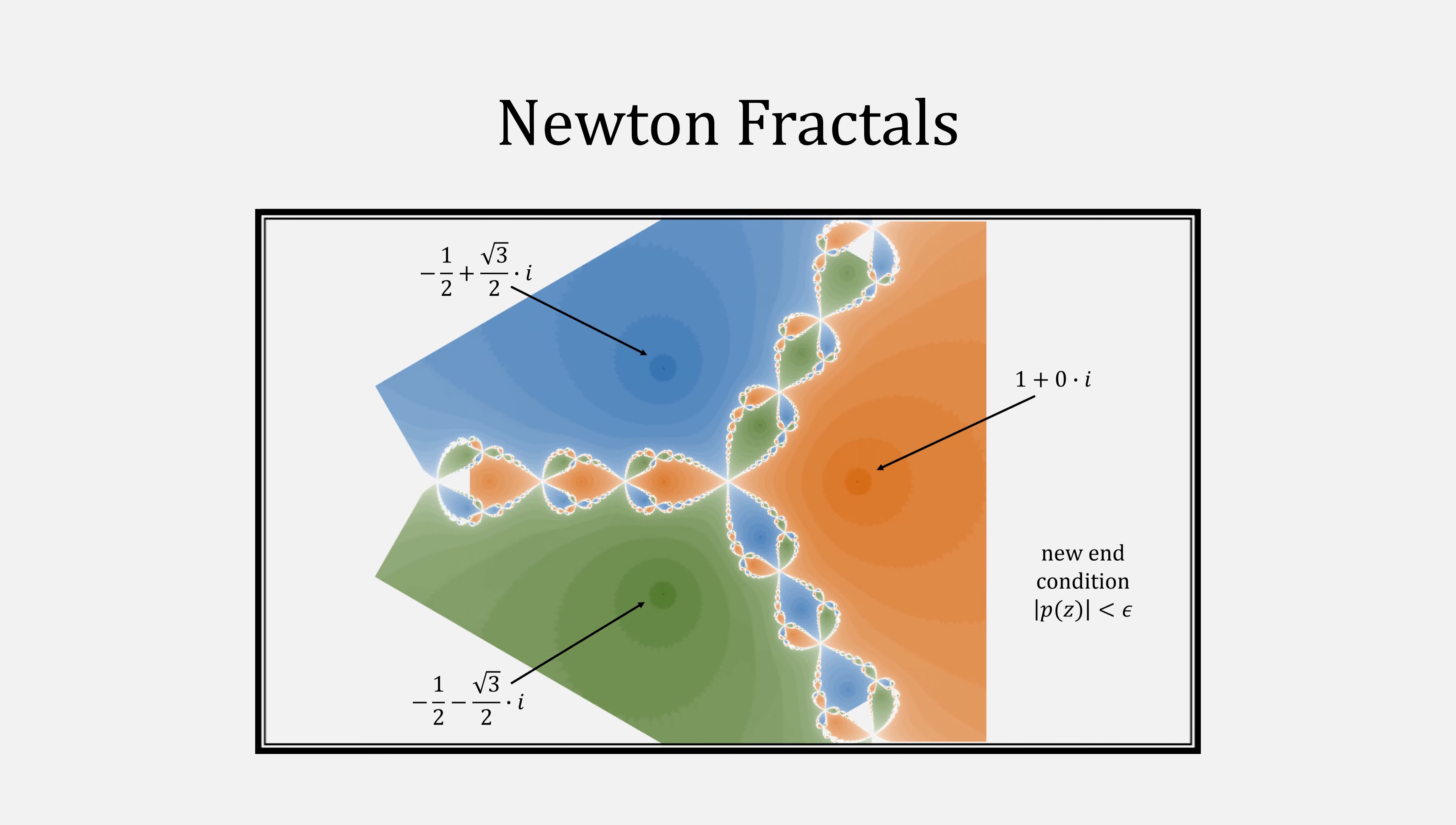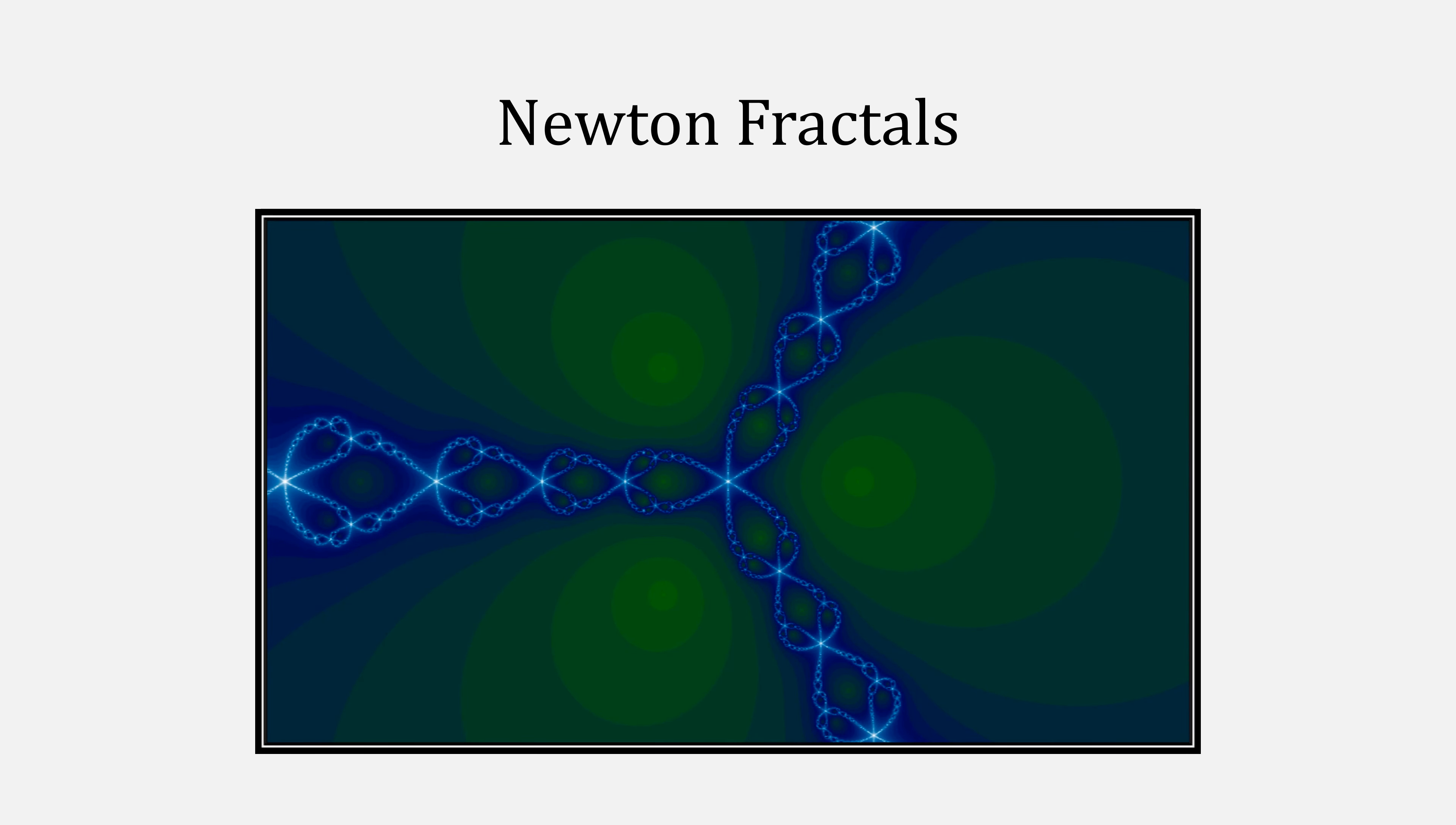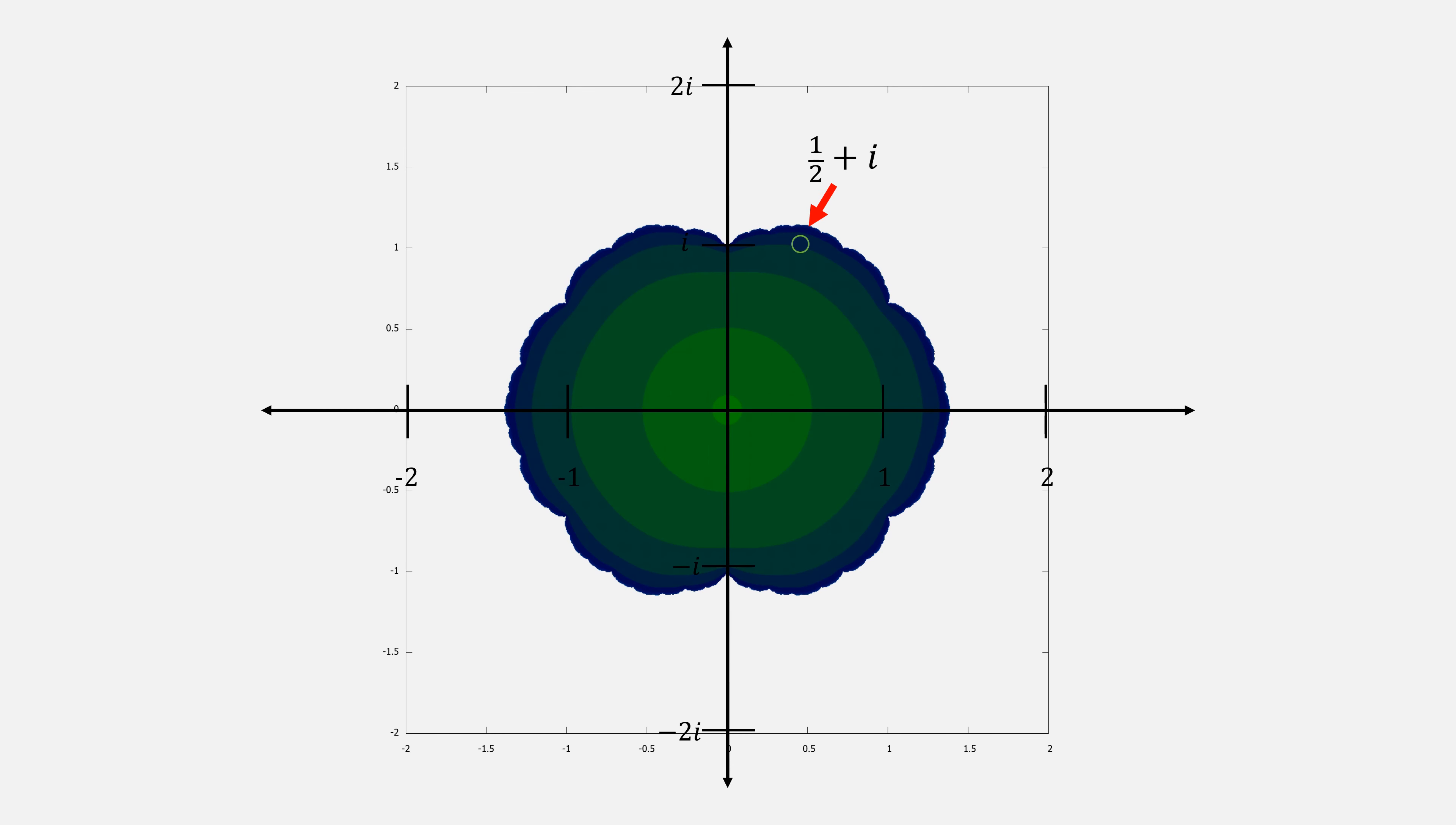Fans of the channel know that I like to use numerical methods to create fractals. If you haven't already, check out my video on Newton fractals. Here is the complex plane. For example, the point at one-half on the real number line plus i. You then color this point depending on how many iterations it takes to converge or diverge to create a fractal. In this case, here is the Newton fractal for the arctangent function.